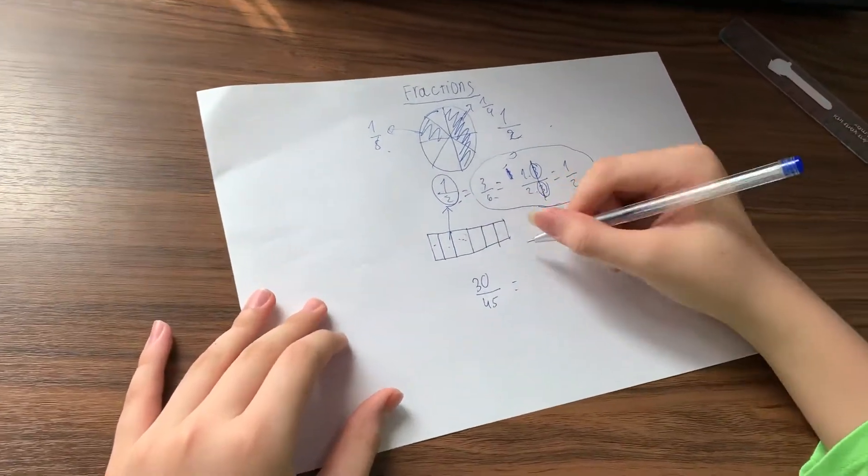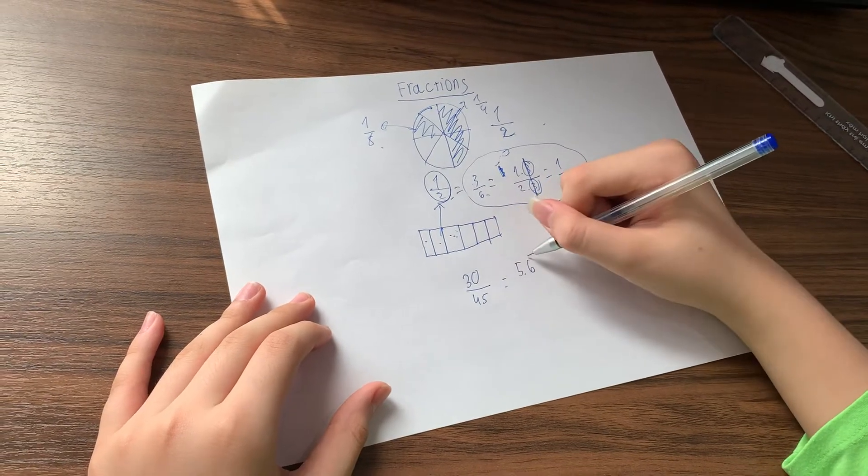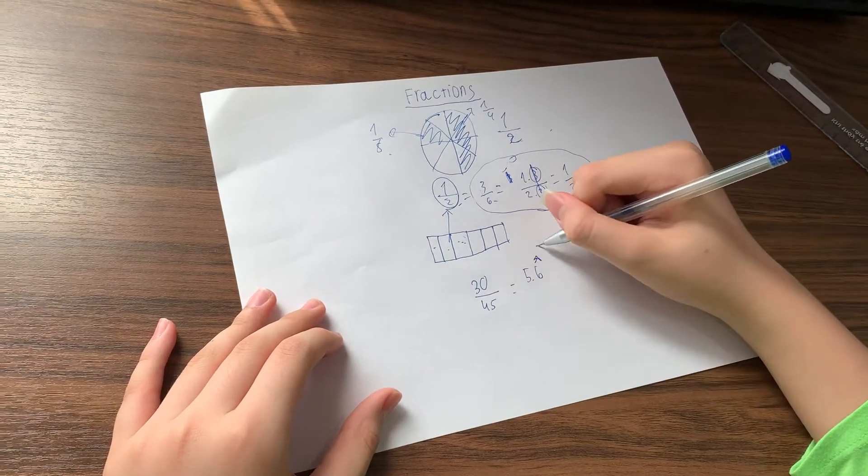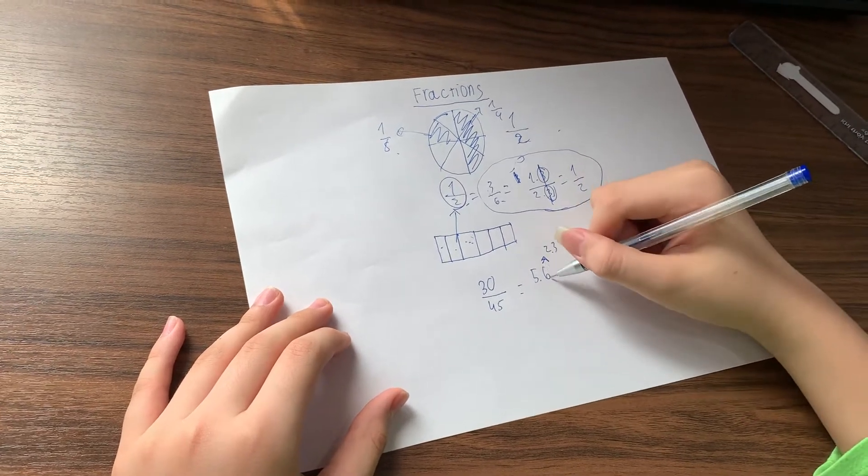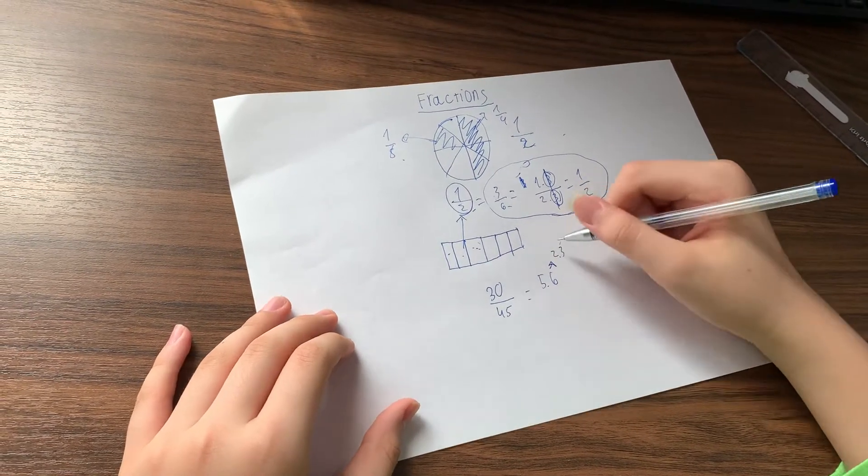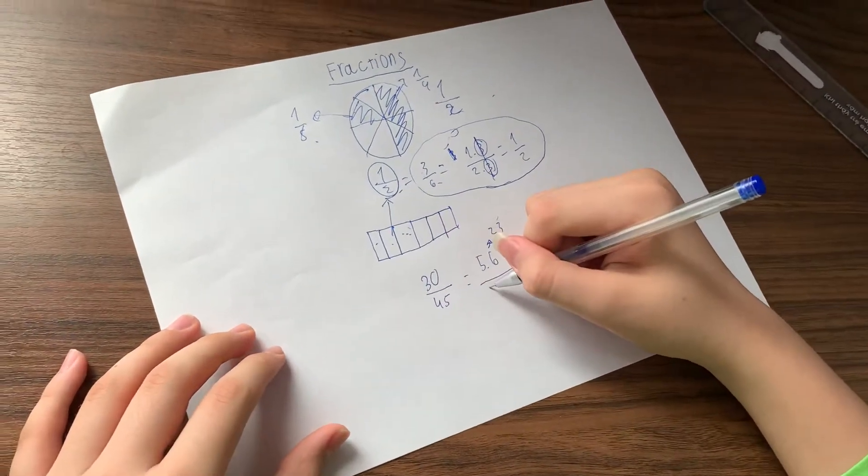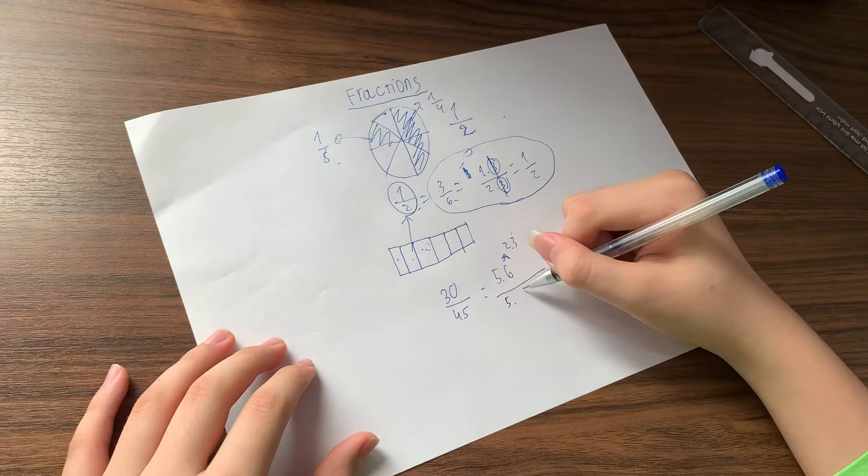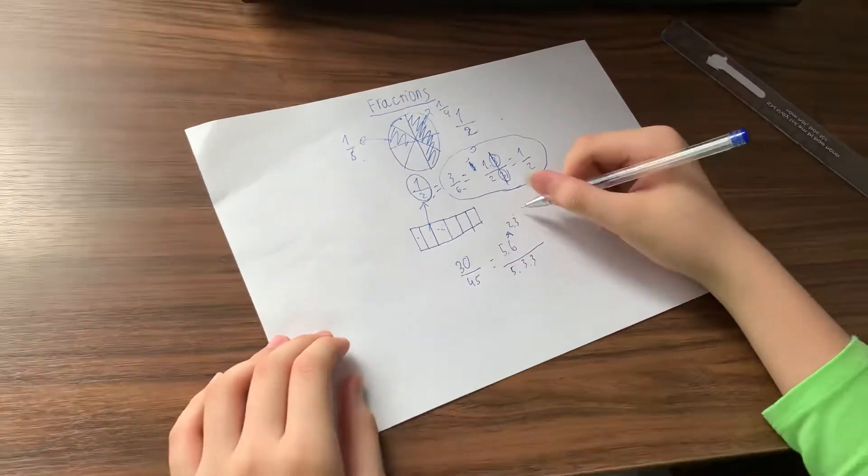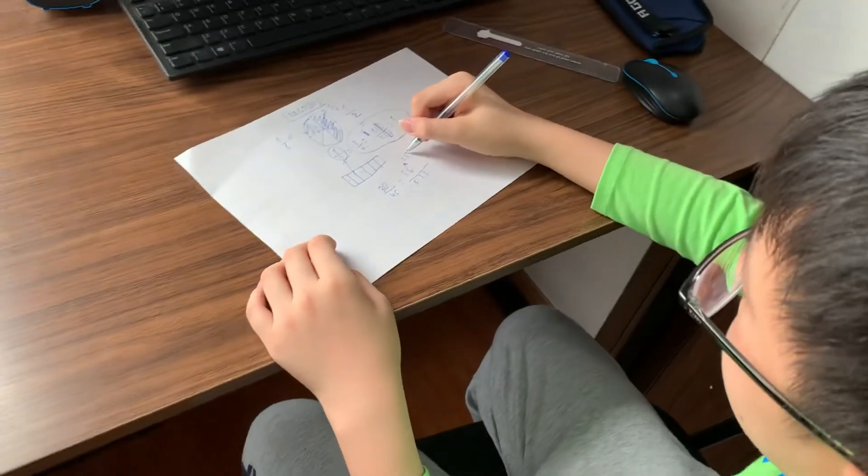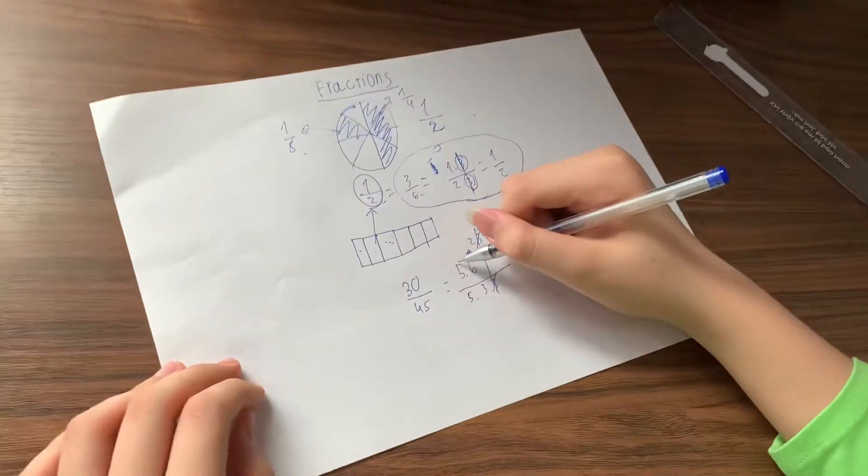So 30 into prime factor is five times six. But six can also be written into two times three. 45 is equal to five times nine. Nine can be split into three times three. You see, there is three here, three here, cancel them out. And there's a five here.